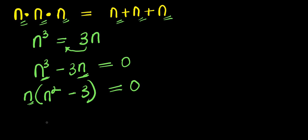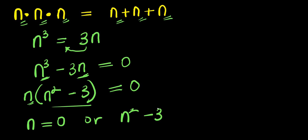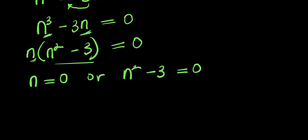Now we can actually have two different equations. We have the first one, n equals zero. Or we have this other one, n squared minus 3 equals zero. For the first one, this is solved already, so this can be our first solution: n₁ equals zero.